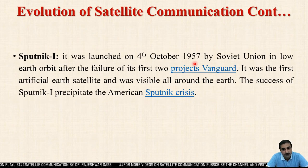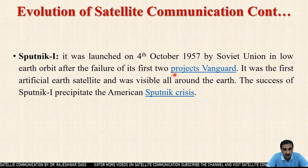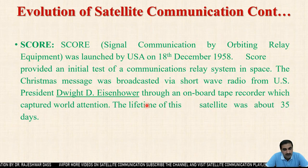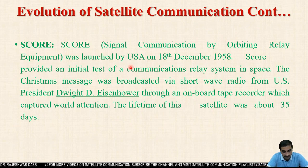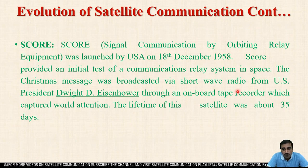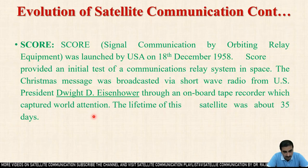Sputnik 1 was launched on 4 October 1957 by the Soviet Union in low Earth orbit, following the failure of its first two Project Vanguard attempts. It was the first artificial Earth satellite, visible all around the Earth, and it precipitated the American Sputnik crisis. SCORE was launched on 18 December 1958 by the USA. SCORE stands for Signal Communication by Orbiting Relay Equipment and provided an initial test of communication relay systems in space. The first Christmas message was broadcast via this satellite using short waves by the US president through an onboard tape recorder, capturing world attention. The lifetime of this satellite was only 35 days.